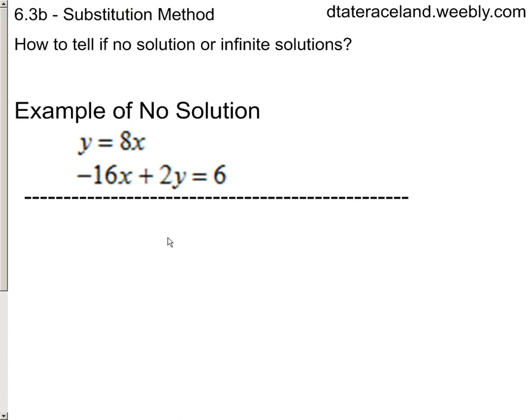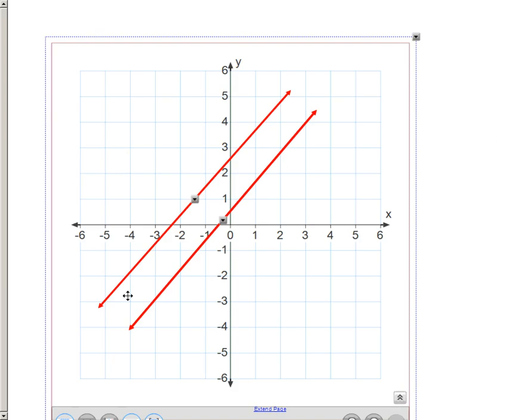We're looking at substitution method, and we're using it instead of the graphing method. We know that if we were to graph two lines and they did not touch, that would be a no solution.